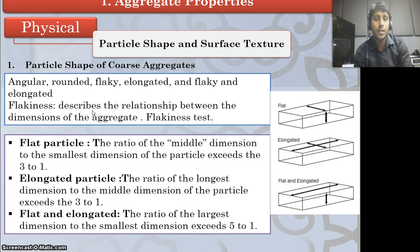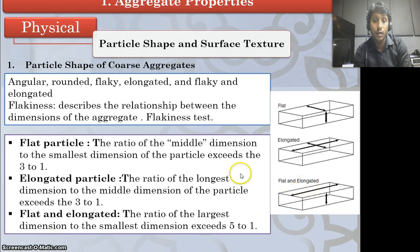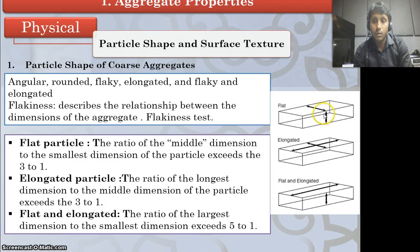Flakiness describes the relationship between the dimensions of the aggregate. Concentrate on how to determine if a particle is flat, elongated, or flat and elongated. I can ask you in class: how can you determine a particle as flat? The shortest length is 1 and the middle length is 3. If the ratio of the middle dimension to the smallest dimension of the particle exceeds 3 to 1, then you can classify that particle as flat. Similarly, go through elongated particle and flat and elongated definitions.